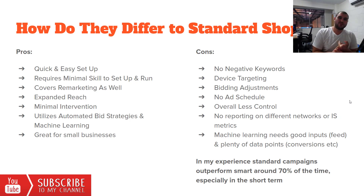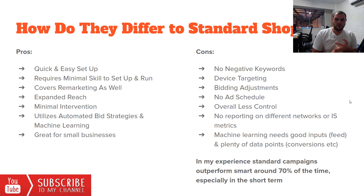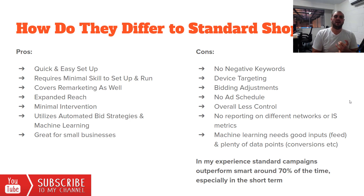You lose ad scheduling control — if you know that between 8pm and midnight is when you make your sales, you can't switch it off for the rest of the period. Reporting isn't as good either; we don't have impression share metrics and we don't know which networks are converting. Machine learning needs good inputs, and if you aren't good at feed management or upload a non-optimized feed, your sales are only going to be as good as what you put in.